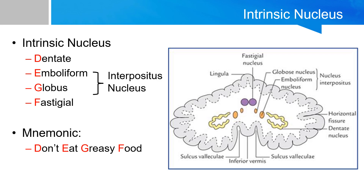The dentate nucleus is the largest of the cerebellar nuclei, situated deep in the white matter of the lateral hemispheres. It resembles a crushed paper bag with its open end facing anteromedially, and it is named dentate because of its tooth-like serrated edge. It takes on this shape because, unlike the other nuclei, the dentate nucleus partially encloses bundles of white matter that form the dentato-rubro-thalamic and the dentato-olivary tracts, which will be covered in future videos.